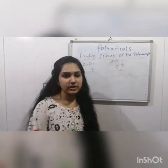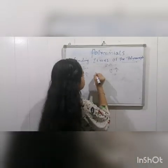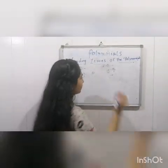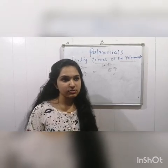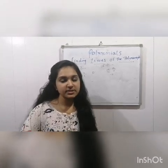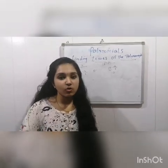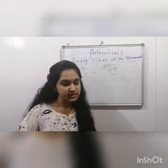But for a linear polynomial, we can only have one zero. If we have more than one zero, there will be a variation in the coefficient and the zeros.